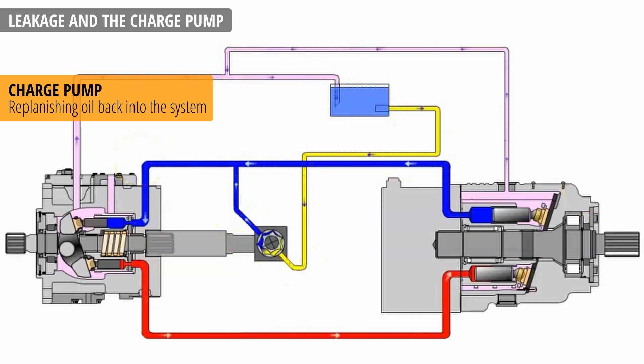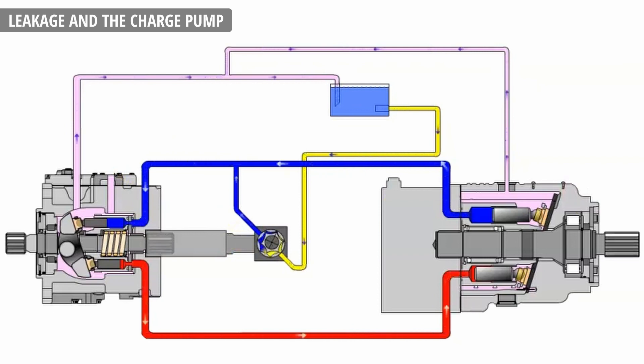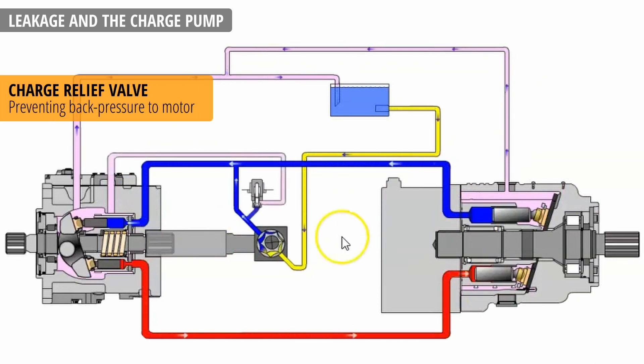Oil is returned to the low pressure line. To prevent the back pressure on the motor, the charge relief valve is added to the loop.